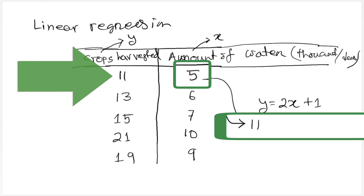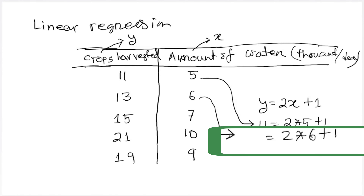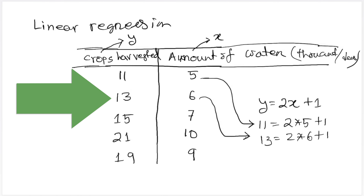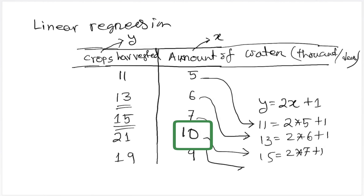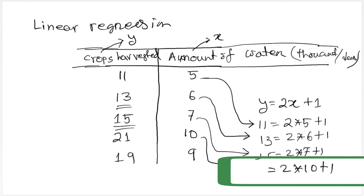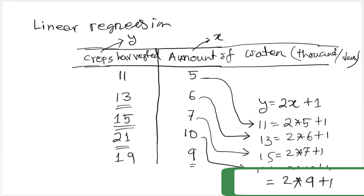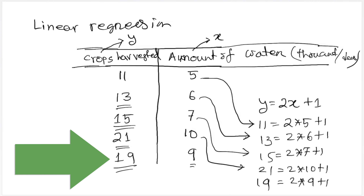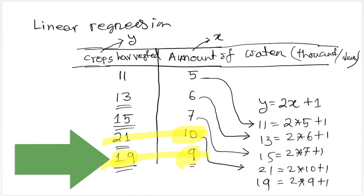If you answered 19, then you are correct. In your mind, you have built up a model. The model says that if X is the water variable and Y is the harvest variable, then the model is Y equals 2X plus 1. Notice that when you have 5, 11 is equal to 2 times 5 plus 1. For 6, 2 times 6 plus 1 is 13. For 7, you have 2 times 7 plus 1, which is 15. For 10, you have 2 times 10 plus 1, which is 21. For 9, you have 2 times 9 plus 1, which is 19. If you were able to answer that question, that means you are already familiar with linear regression.